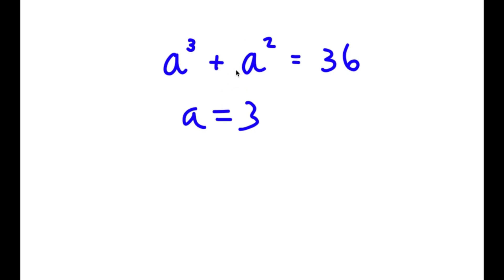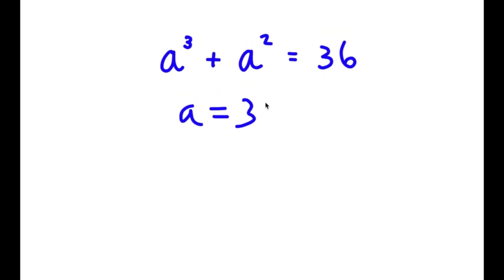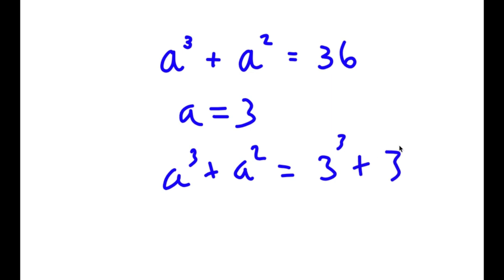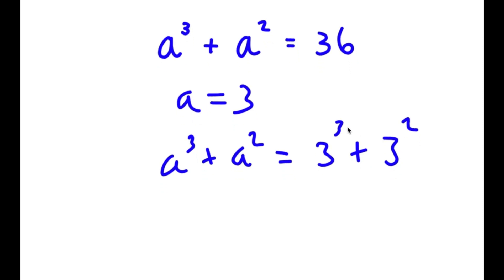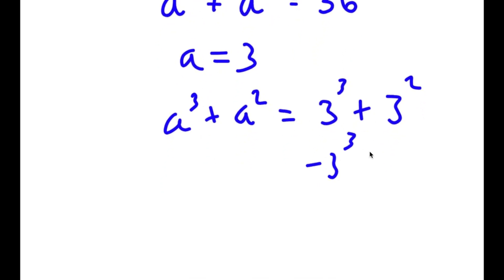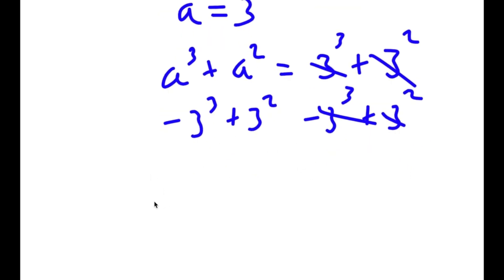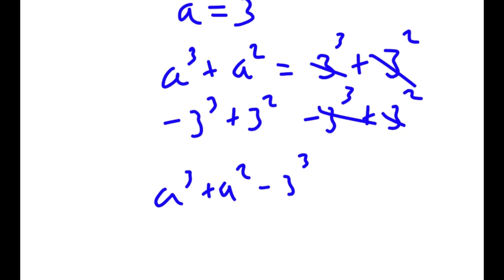Now that we've found one solution, we can use it. We set a³ + a² equal to 3³ + 3² because we know a equals 3. Then I subtract 3³ plus 3² from both sides, so those cancel out, and I get a³ plus a² minus 3³ minus 3² is equal to 0.